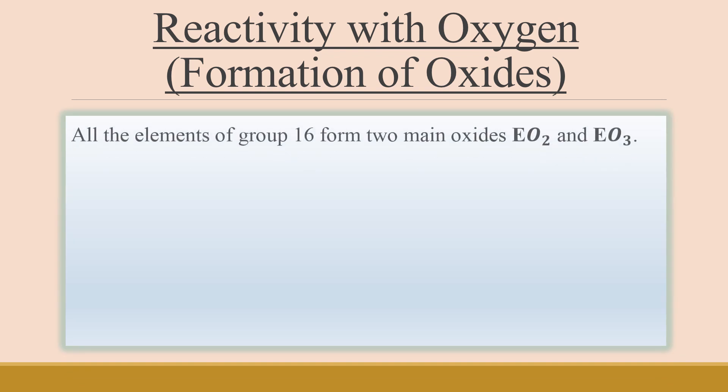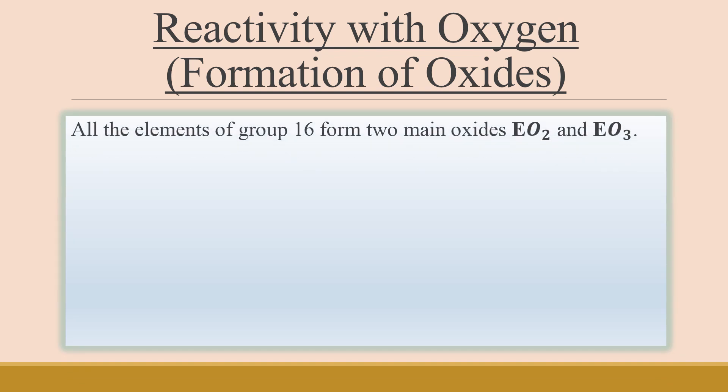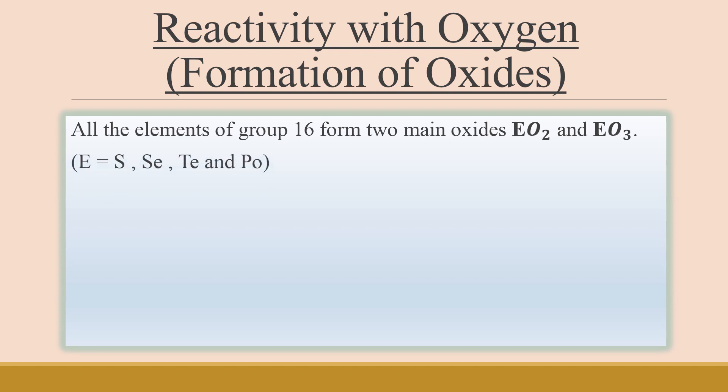All the group 16 elements form two main oxides: EO2 type oxides, which are dioxides, and EO3 type oxides, which are trioxides, where E is any of the group 16 elements.